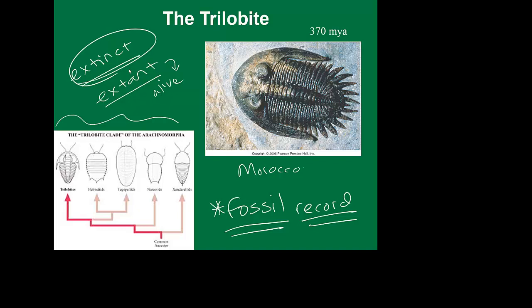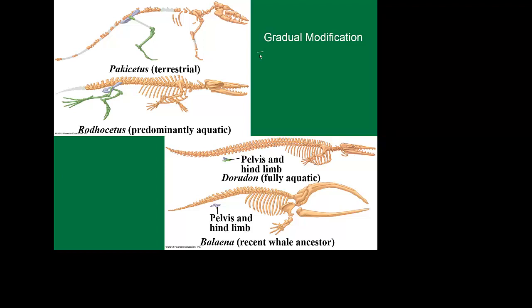We'll talk more about phylogenetic trees later, but on this one, this organism is actually evolutionarily the oldest, and this one is evolutionarily the youngest. We've mentioned before that older organisms tend to be more simple — would you consider the organism on the right to be more simple than the organism on the left? Probably. We'll look at things like gradual modification. Evolution is not fast; it is a process that goes painfully slowly. We have to think about how we can use extinct fossils and extant species to better understand relationships.